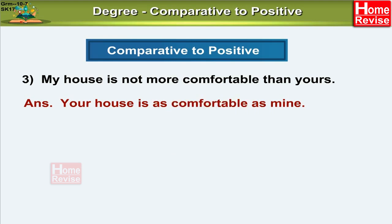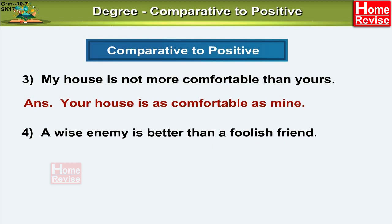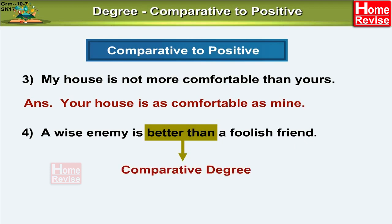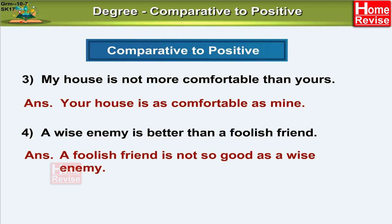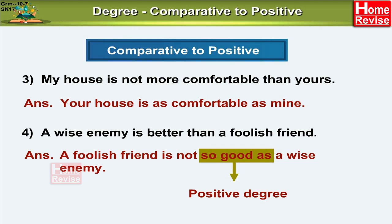Here is another example. A wise enemy is better than a foolish friend. 'Better than' is the phrase which denotes comparative degree. What is the positive form of the comparative degree 'better'? It is 'good'. So in our positive sentence, it is going to be 'as good as'. Since our comparative degree is a positive sentence, we are going to use a negative sentence in our positive degree: a foolish friend is not so good as a wise enemy. This is how we change a comparative degree into positive.